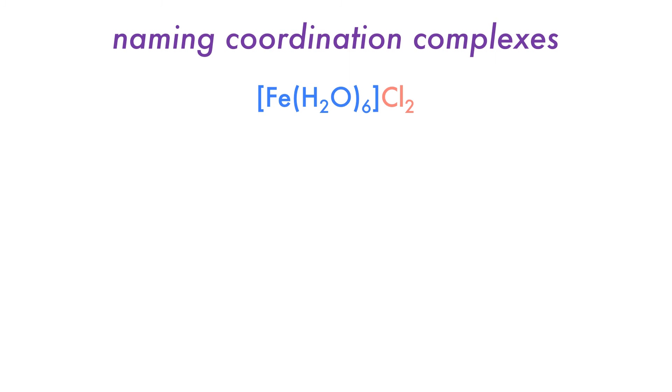We can determine the charge of a complex from its formula if we know the usual oxidation states of common ligands. For this Hexa-Aqua iron chloride complex, we know that chloride ions usually have a charge of minus one, and so if there are two of them, we must have a charge of plus two on the cation in order to balance the charges.